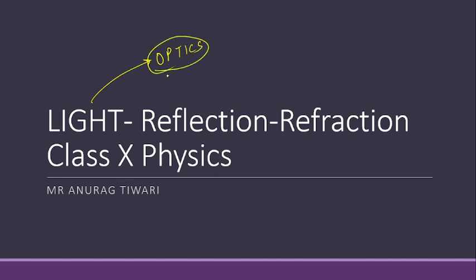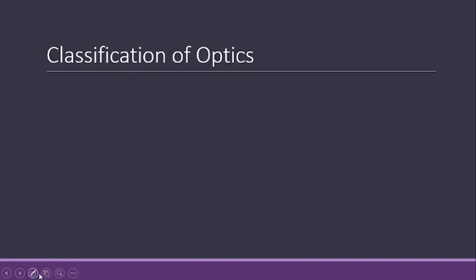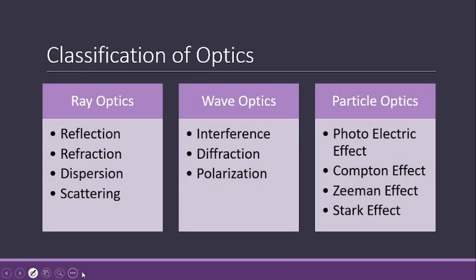On the basis of different events and their nature, we classify optics in three major parts. One part is ray optics, second is wave optics, and third is particle optics.